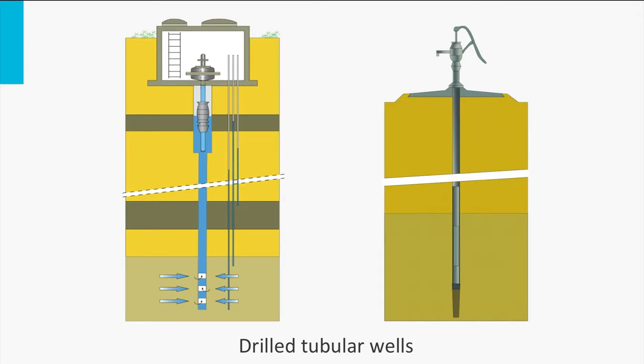The most widespread method for vertical abstraction of groundwater is drilled tubular wells. Considering the required contact area with the aquifer, these types of wells can only be applied in cases where aquifers have enough thickness. A series of wells has to be constructed for larger capacities. Every well can be supplied with its own pump, or it can be centrally drained with a vacuum system.